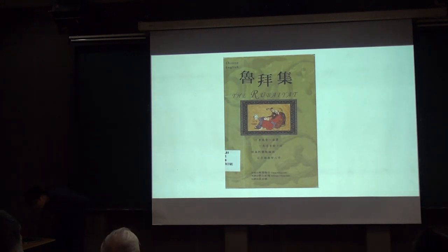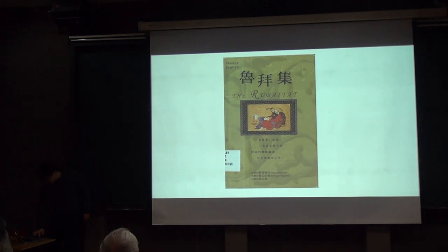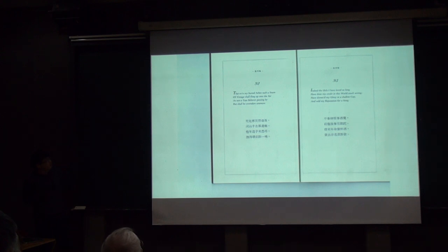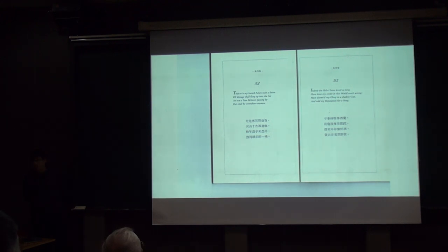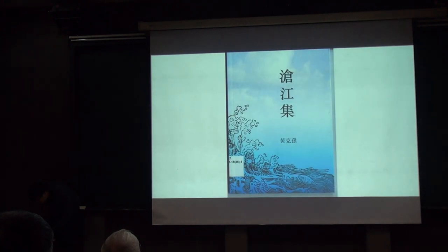His translation of English poetry into Chinese is a classic in itself. The Rubaiyat is a form of Persian poetry — a four-line poem — and Professor Huang translated it into Chinese literature beautifully.